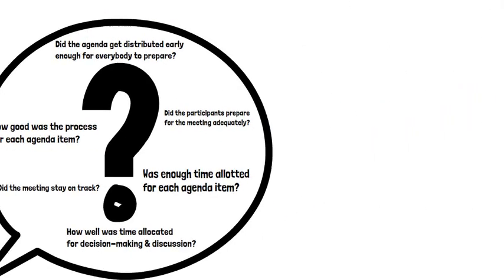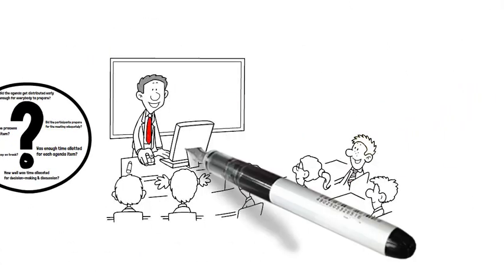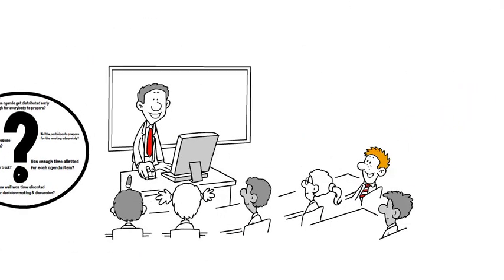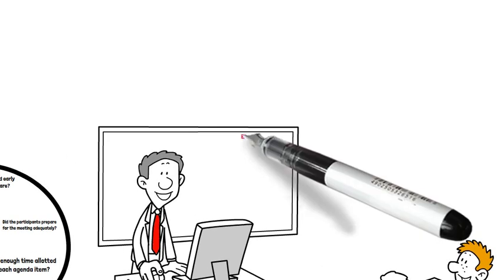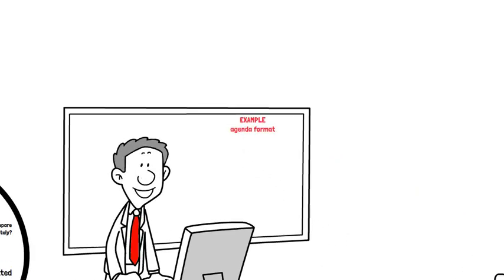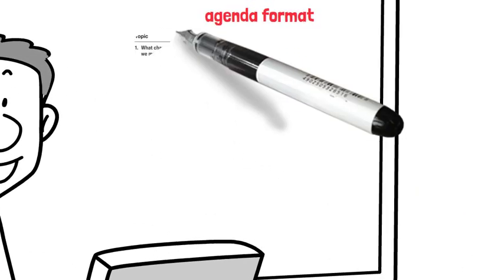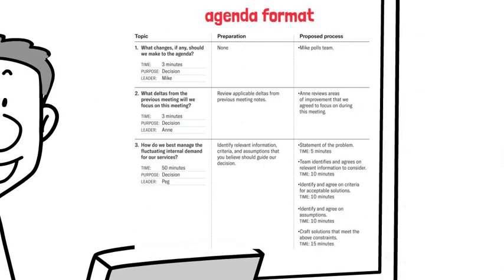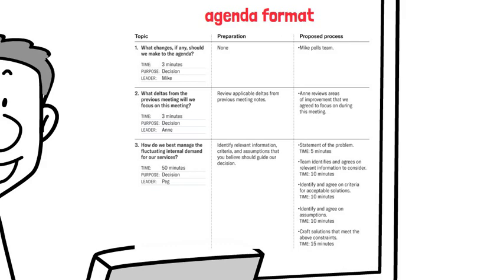Here is an example of an effective agenda from the Harvard Business Review. It includes the topic with a time, purpose and leader, preparation required, and the proposed process.